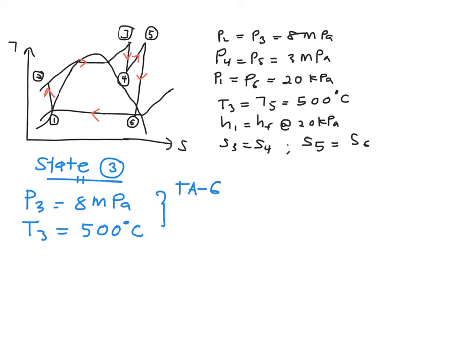So from table A6 at a given pressure of 8 MPa and temperature 500 degrees C, your enthalpy H3 is equal to 3399.5 kJ per kg.